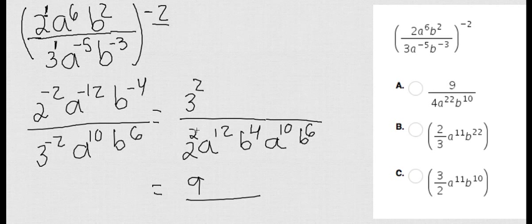3 squared is going to be 9. 2 squared is going to be 4. A to the 12 and A to the 10 is going to be A to the 22 and B to the 4 and B to the 6 is going to be B to the 10. And look, my beautiful answer.